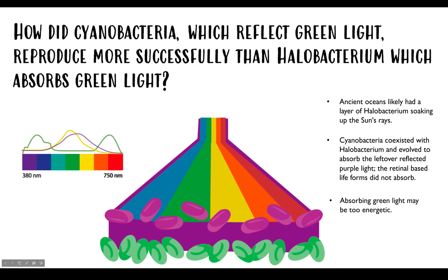Being too good at absorbing green light has been shown in laboratory conditions to essentially burn the organism — it becomes too efficient and kind of overheats. You can see here in the diagram: this green band is where chlorophyll is really good at absorbing light at the red and blue-purple regions; our sun peaks in the green region; and retinol is really good at absorbing light in the green. So essentially it gets something like a sunburn. As cyanobacteria got better at photosynthesizing, it created a lot of oxygen waste that built up, forming plumes over different parts of the planet — you can actually see this in ancient iron deposits where the iron begins to oxidize.